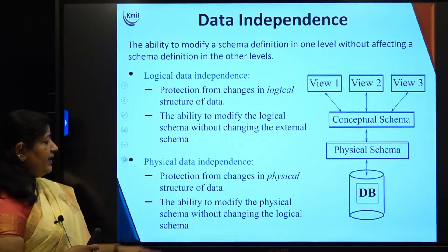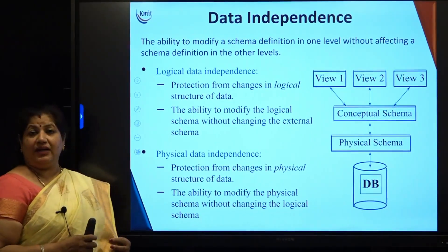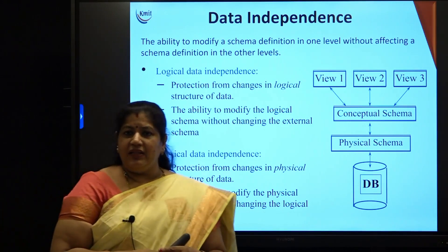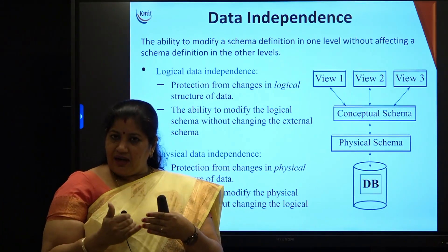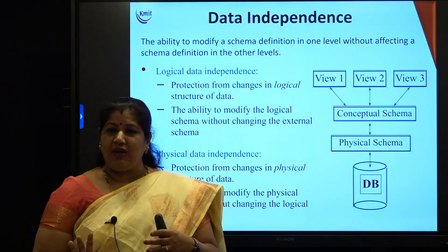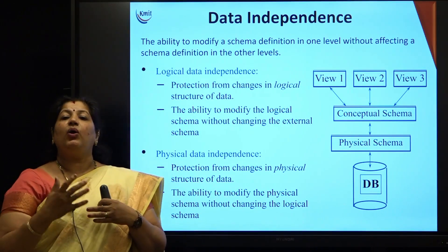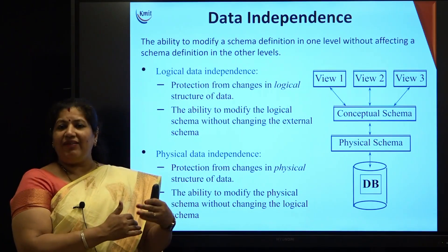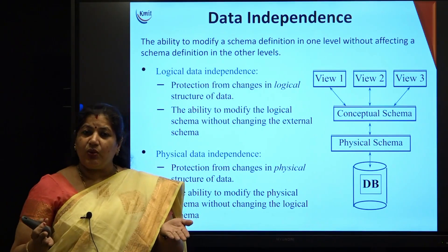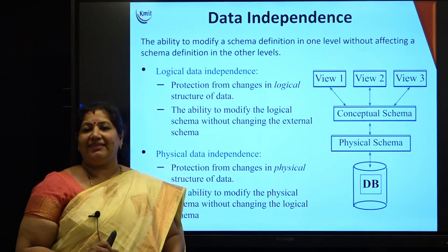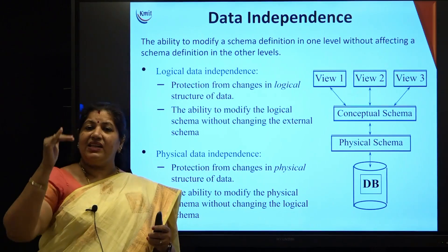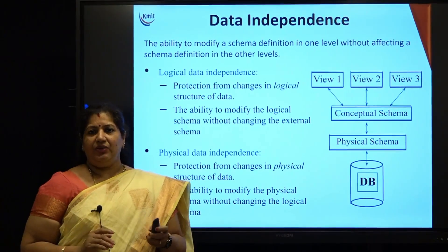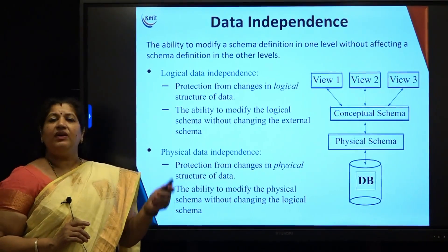Physical data independence is the protection from changes in the physical structure of the data — the ability to modify the physical schema without changing the logical schema. If I decide to switch from sequential access to random access, the logical structure will not change; only the way data is accessed changes, which may guarantee faster access. Similarly, moving the storage structure from one storage media to another will never have an impact on the logical schema. This is called data independence, where changes in one level will not impact another level — one of the major features of a database.